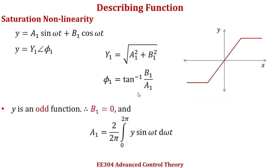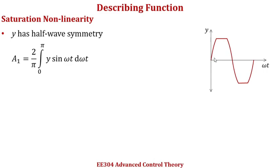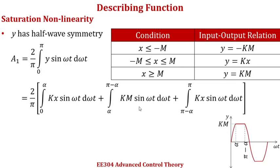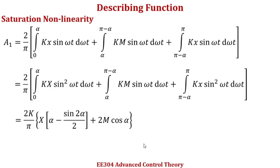Just a recall of the equations required to derive the describing function: the expressions for y1 and phi1 are given. Since the input-output characteristics is an odd function, b1 is equal to 0. The next objective is to determine a1. Since the output is half-wave symmetrical, we integrate from 0 to pi rather than 0 to 2pi. The range 0 to pi is divided into three sections: omega t from 0 to alpha, from alpha to pi minus alpha, and from pi minus alpha to pi. The corresponding mathematical representations are taken from the input-output relationship table, and on simplification we get an expression for a1.